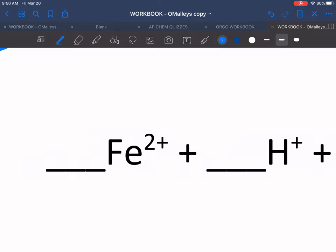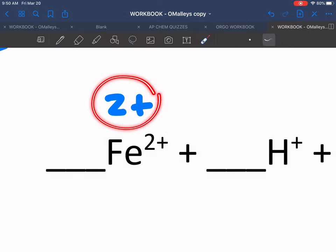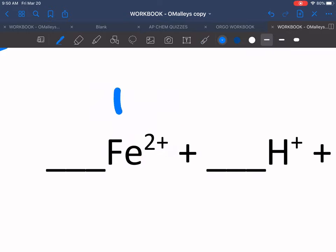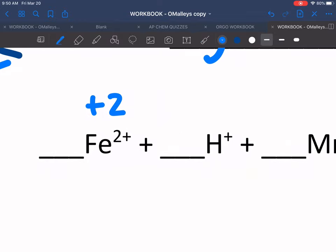The rules for monoatomic ions are very simple: the charge is the oxidation state. Remember the difference between oxidation state, which is sign followed by number, and charge, which is number followed by sign. Very few people are going to care if you get that wrong, but that's why you see them in two different ways. Fe2+ is plus 2, H is plus 1.